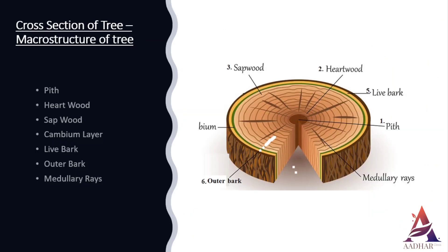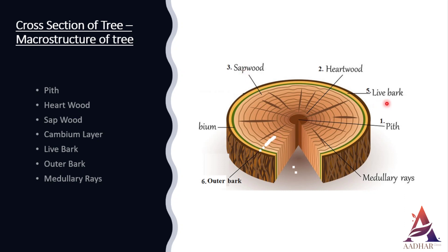The structure of wood visible to the naked eye or at a small magnification is called the macro structure. If we look at a cross section of any tree, we will see the following parts from inside to outside: number one, pith; number two, heartwood; number three, sapwood; number four, cambium layer; number five, inner bark; number six, outer bark; number seven, medullary rays. You can use the pH scale to remember the order of these layers.